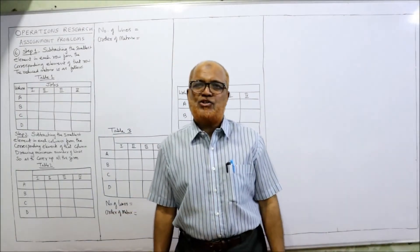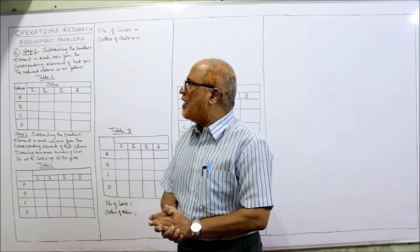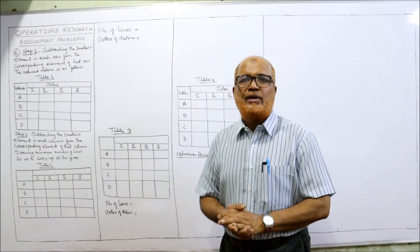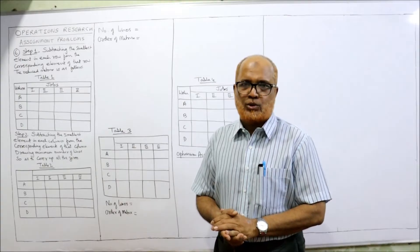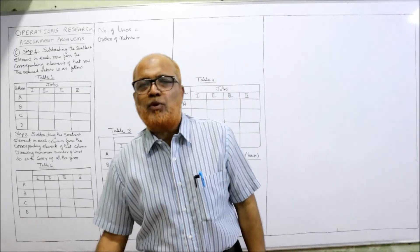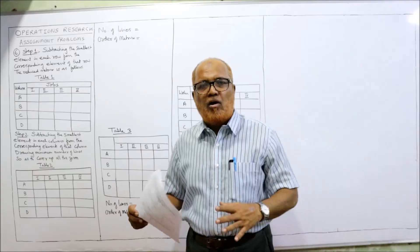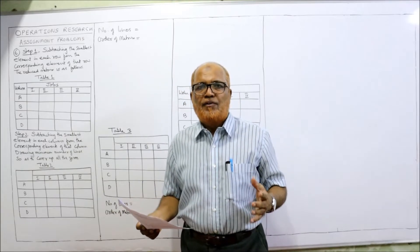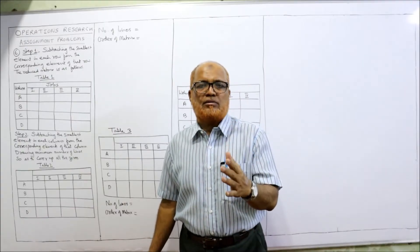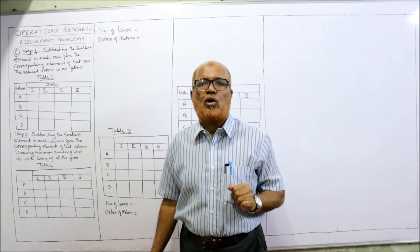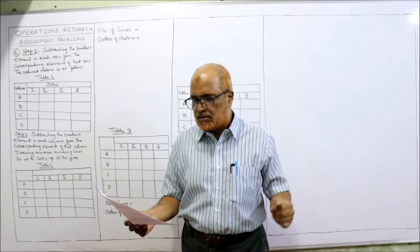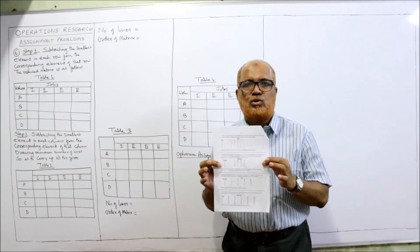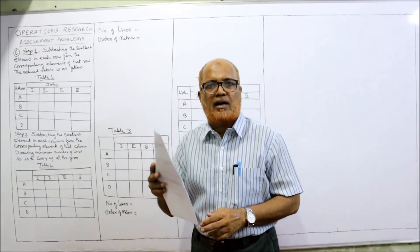Hello viewers, welcome to my channel. I am Hashem Ali Khan. So far 5 problems I have completed on assignment problems. Now in this video the 6th problem I am going to do. Almost every problem the procedure remains the same — the algorithm given by Hungarian mathematician D. Koenig. First step: row subtraction. Second step: column subtraction. Then we draw the minimum number of lines. Before starting the 6th problem, I expect my viewers to have a printout of the problems given in the link under my description.